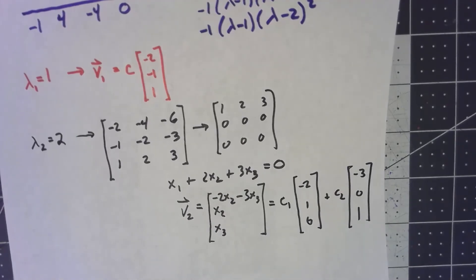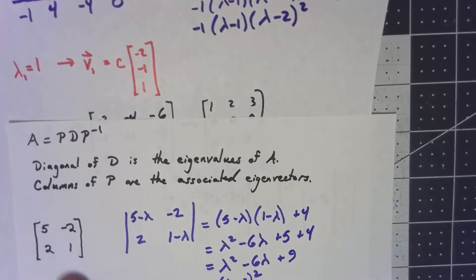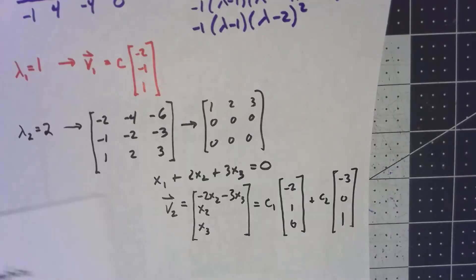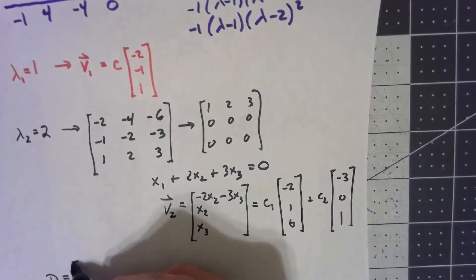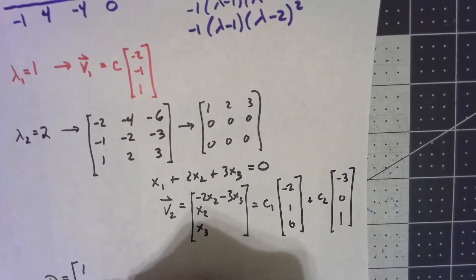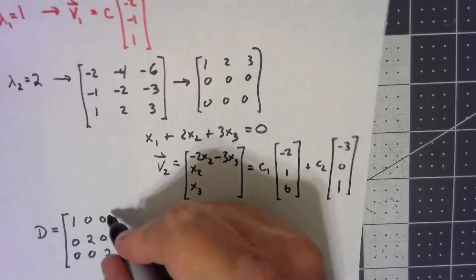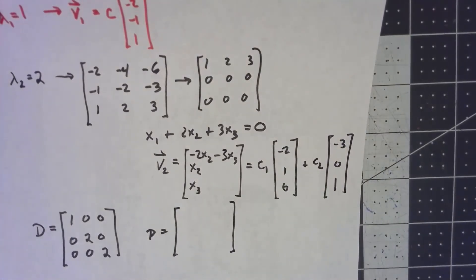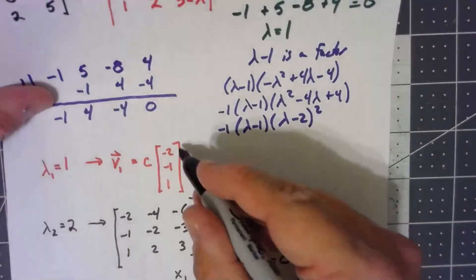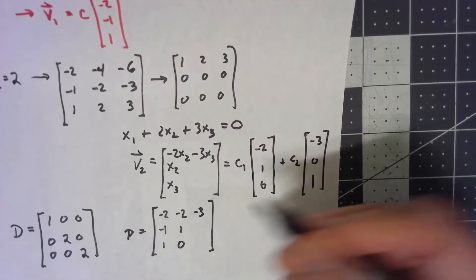So now going back to our whole idea about this: the diagonal of D are the eigenvalues of A, and the columns of P are the associated eigenvectors. So putting that together, I can say my D matrix is: I've got a one, a two, and a two, because the two had multiplicity two, zeros everywhere else. And my P matrix has the columns that correspond to the eigenvectors of those eigenvalues. Corresponding to one, we have the [-2, -1, 1]. Corresponding to the two, I had these two: I had a [-2, 1, 0] and a [-3, 0, 1].